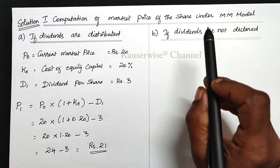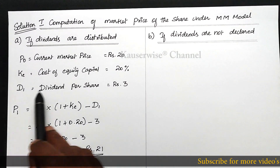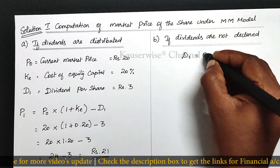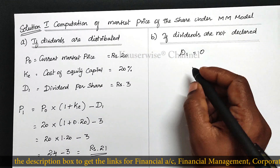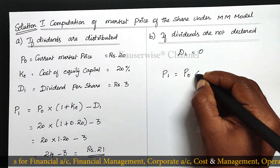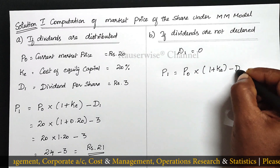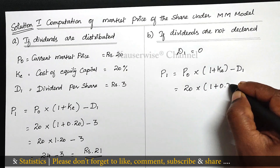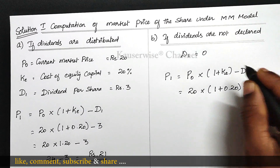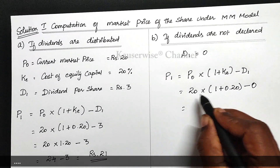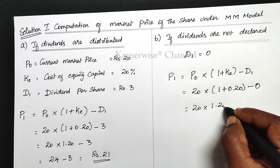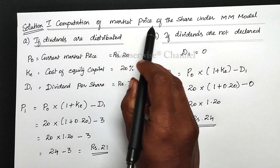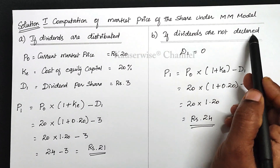Now we are going to calculate the same if dividends are not declared. In this case, D1 is 0. So substituting: P1 = 20 × (1 + 0.20) − 0 = 20 × 1.20 = rupees 24. So rupees 24 is the market price per share at the end of the year if dividends are not declared.